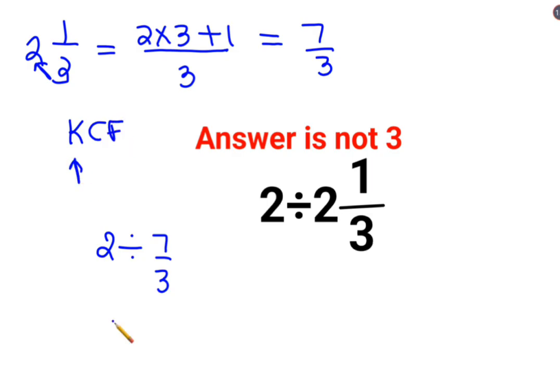Where K stands for keeping the first number as it is, C stands for changing the division sign to multiplication, F stands for flipping or taking reciprocal of 7 upon 3 which is 3 upon 7.